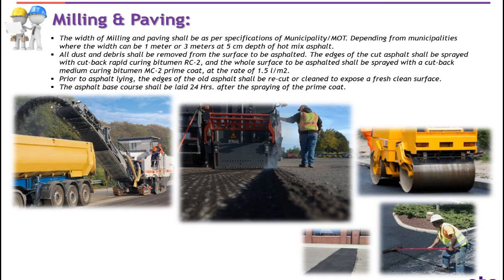The prime coat shall be applied at the rate of 1.5 liters per meter square. Number three: before asphalt laying, the edges of the old asphalt shall be recut or cleaned to expose a fresh clean surface. Number four: the asphalt base course shall be laid 24 hours after the spraying of the prime coat.